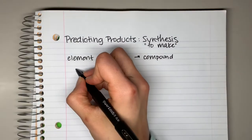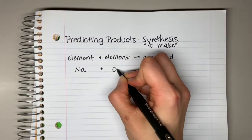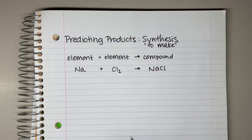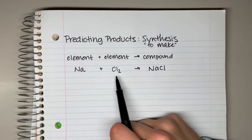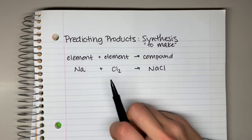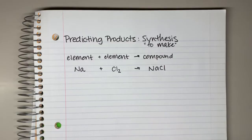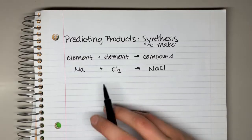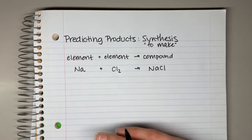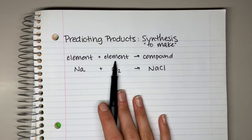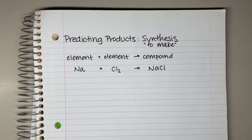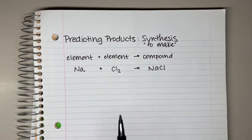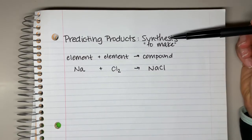For instance, we could put sodium with chlorine to form sodium chloride. Now Cl2 is a compound, but chlorine is a diatomic element — Cl by itself is very unstable, so it naturally bonds with itself to form Cl2. You have to be aware of the diatomic elements; those count as elements instead of compounds in our case. So this is an element reacting with an element, even though it's Cl2 — it's still just chlorine — to form a compound. That's a synthesis reaction.